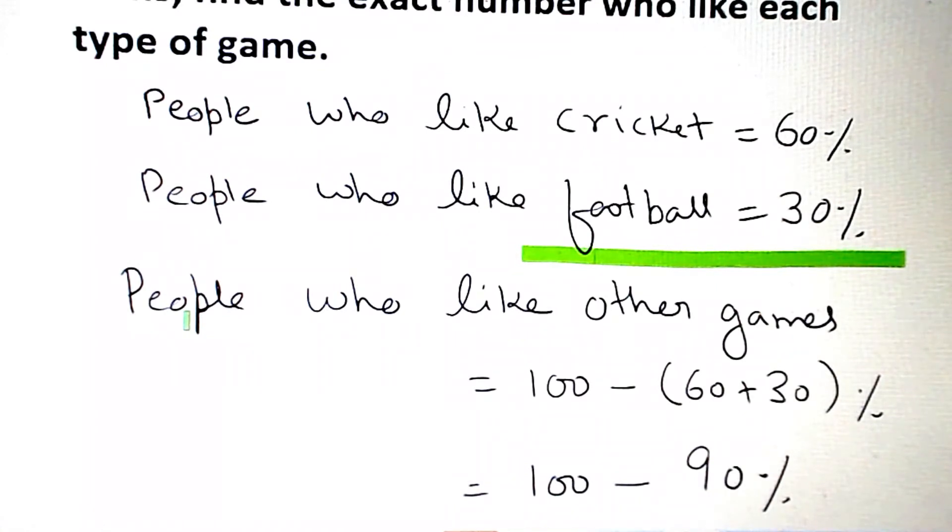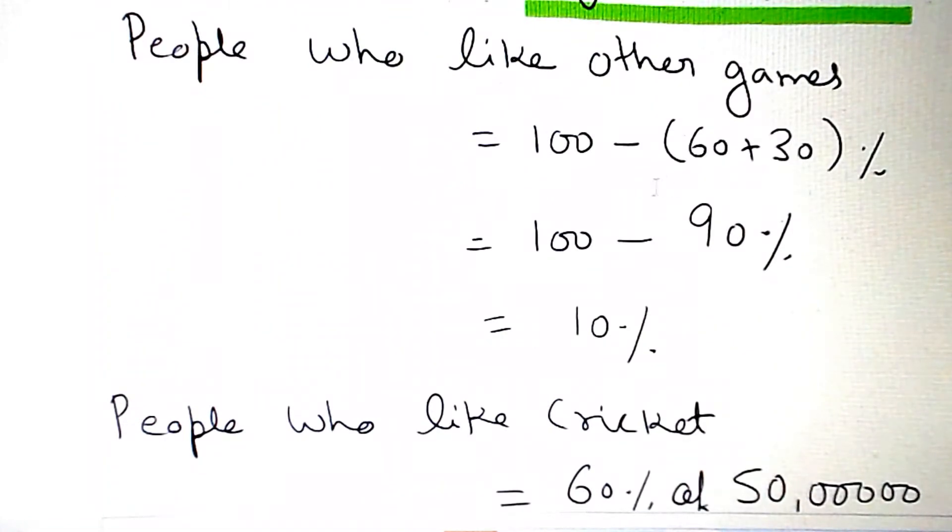People who like other games equals 100 minus 60 plus 30, which equals 100 minus 90, equals 10%.